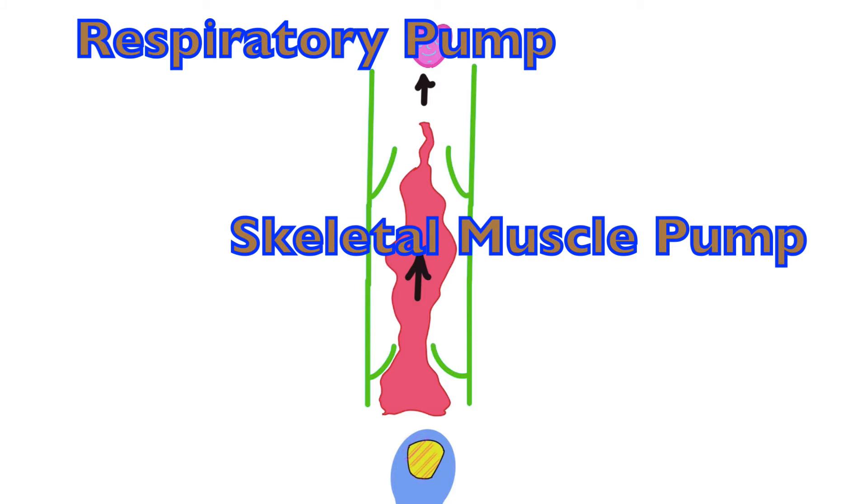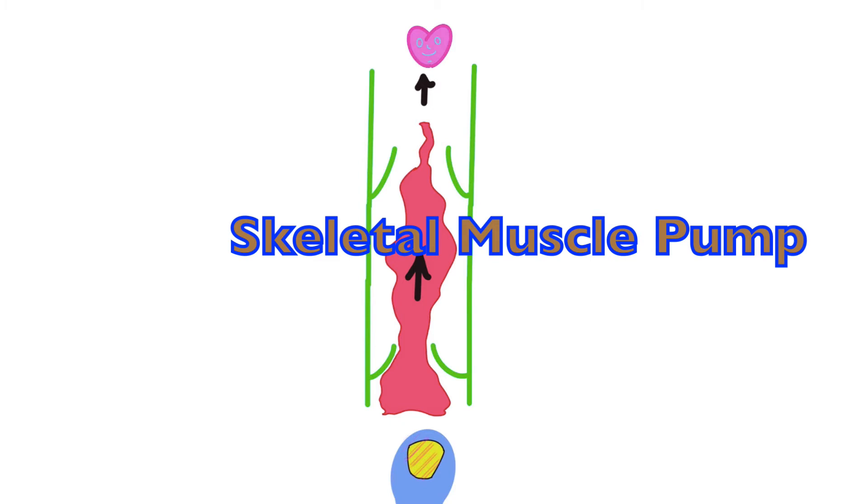And the premise of the skeletal muscle pump is as follows. Blood vessels in the legs and to a certain degree in the arms run between and through and adjacent to skeletal muscle. When skeletal muscle contracts, such as when we are walking, it squeezes on these blood vessels.